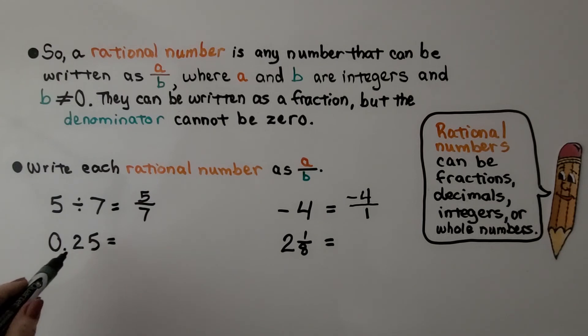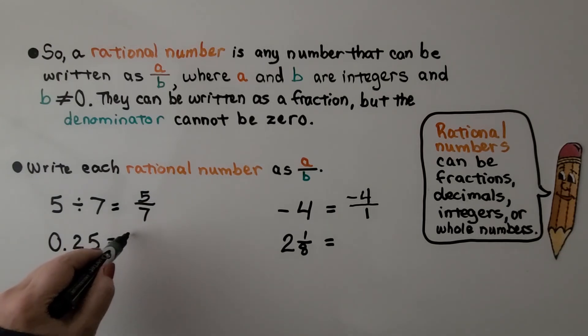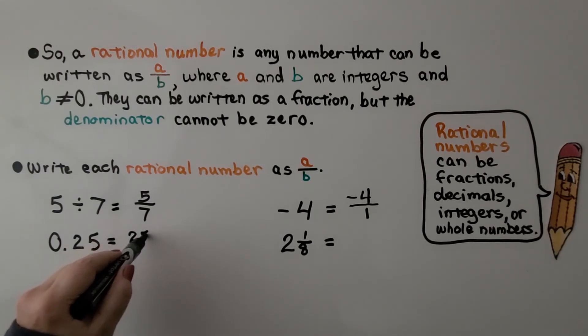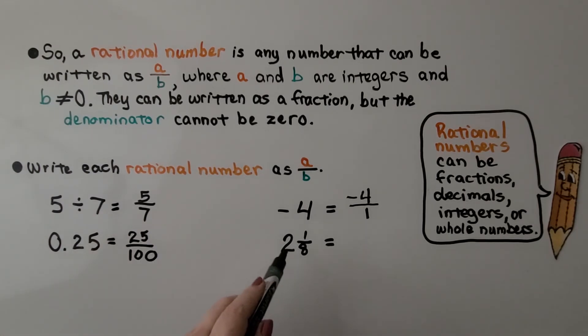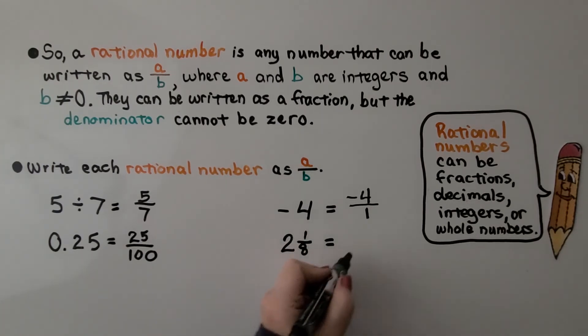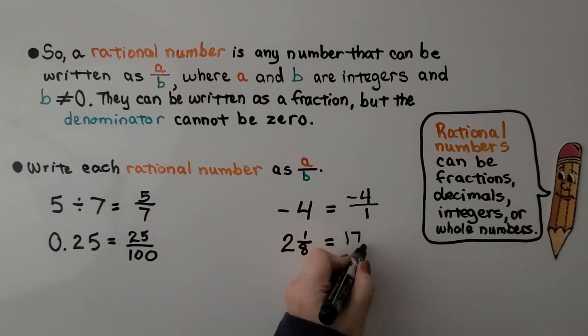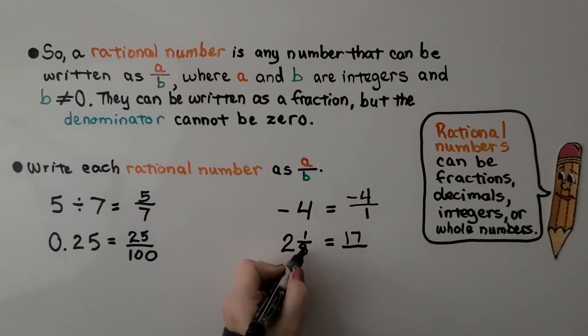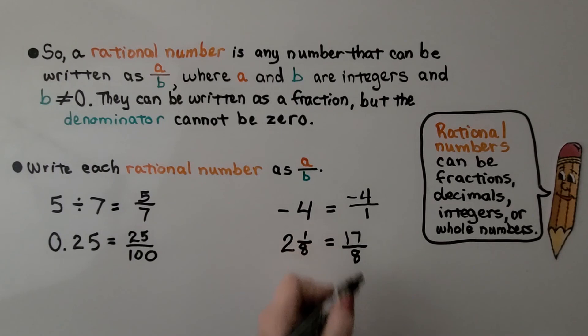Here we have 25 hundredths. We can write it as 25 over 100. And here we have 2 and 1 eighth. We need to do 2 times 8, which is 16 plus 1. That's 17. So that's our numerator. We put it over that denominator. We have 17 eighths.